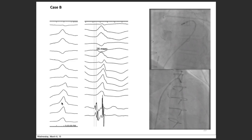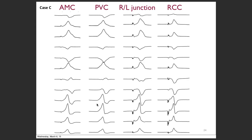We are going to the great cardiac vein through the coronary sinus — deep inside that region. We obtained good potentials there and the VT was ablatable. This demonstrates the different ablation target areas in the LV outflow region.